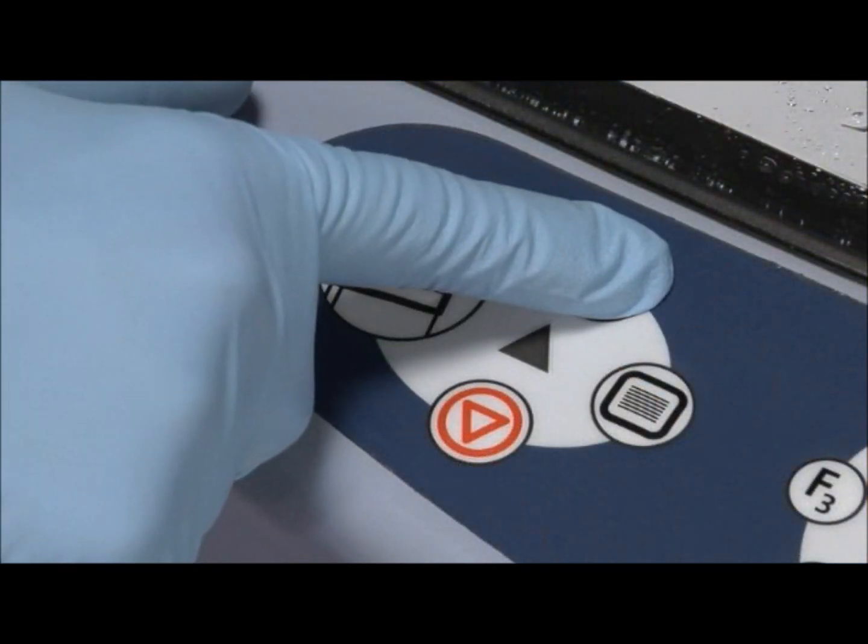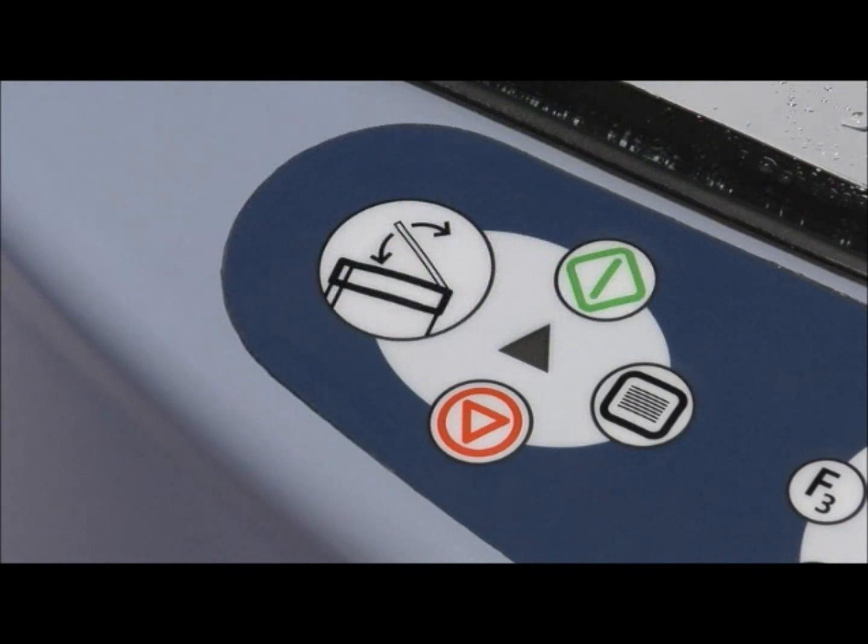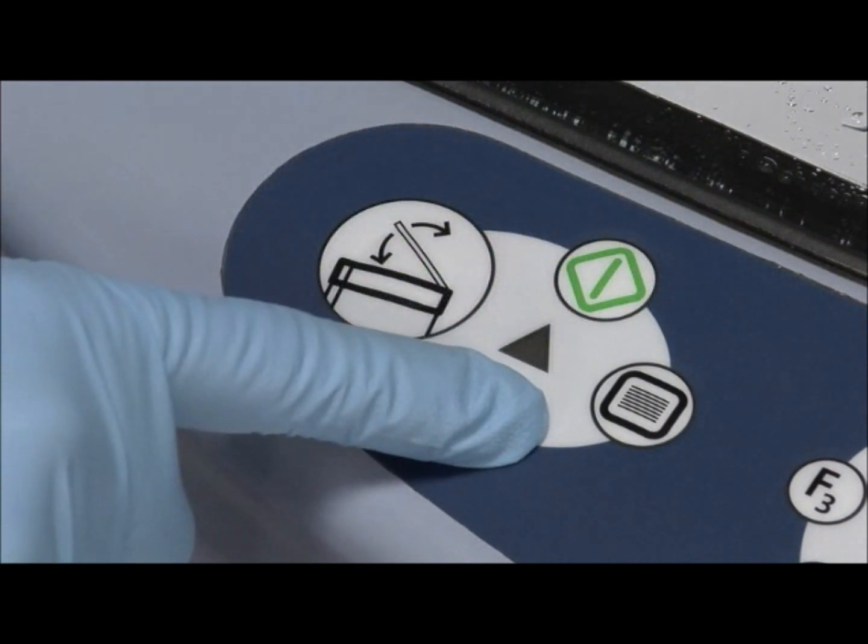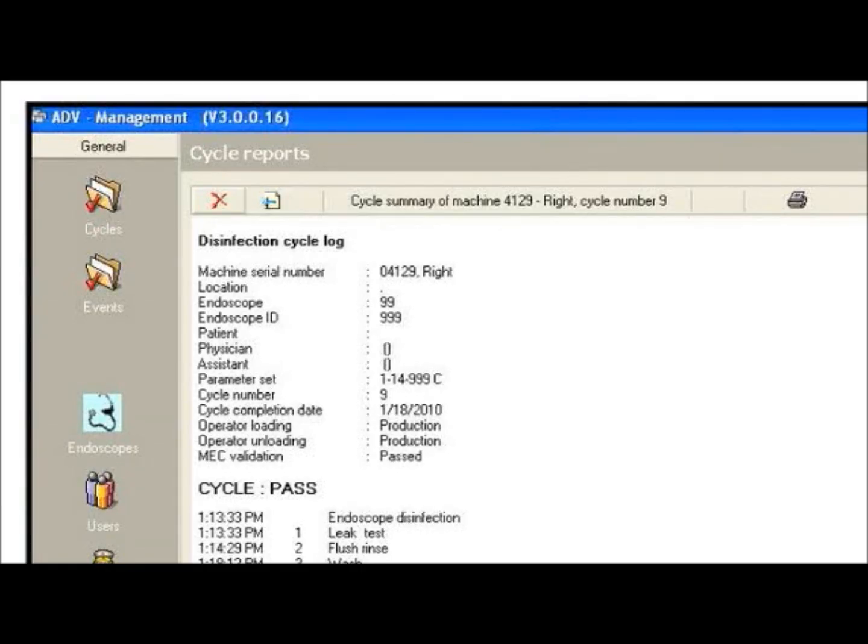Indicate a pass by pressing the start button or a fail by pressing the cancel button. The Advantage Plus will automatically store a record of the cycle, including all the ID data, cycle complete message with test strip pass or fail, and any error messages.